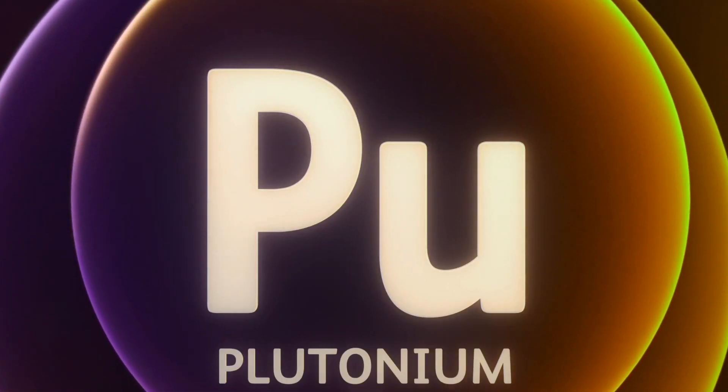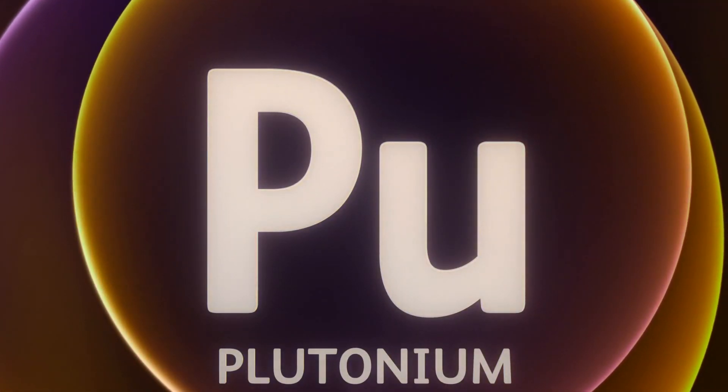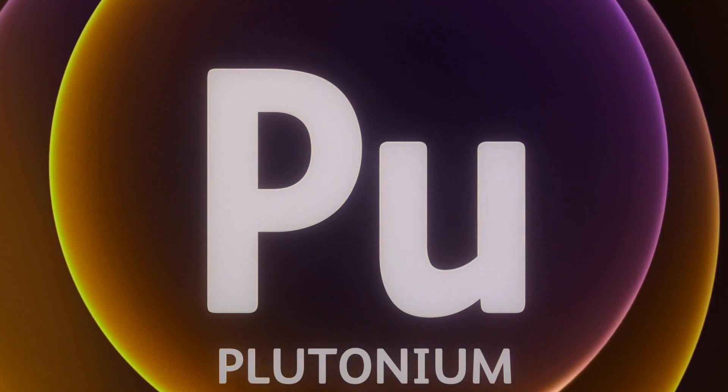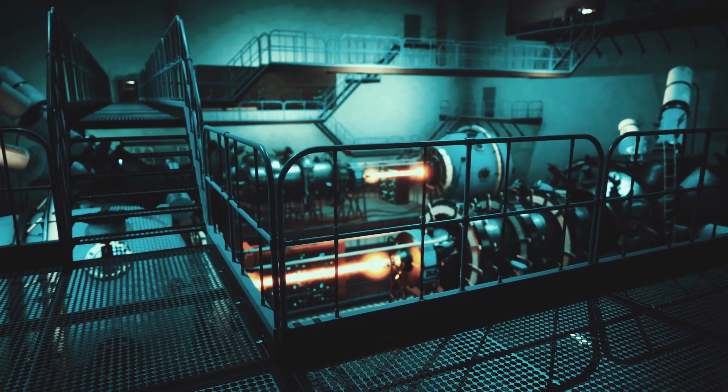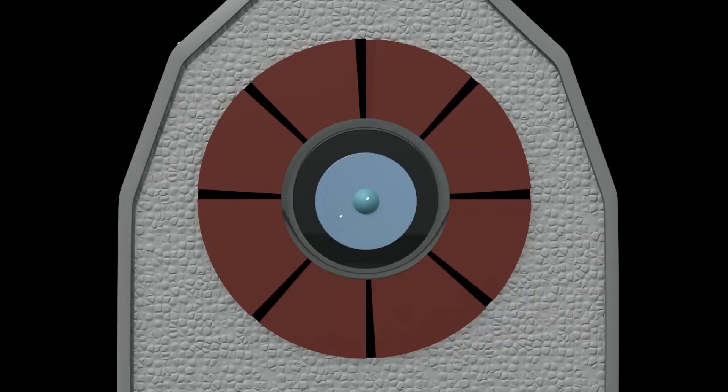Plutonium-239. Plutonium-239 is another fissile material used in nuclear weapons. It is typically produced in nuclear reactors and can also undergo fission when bombarded by neutrons.